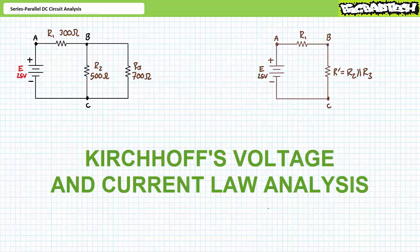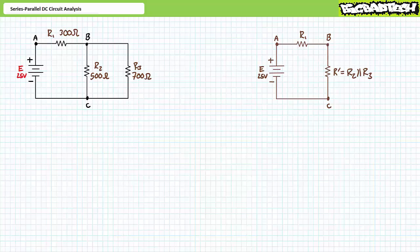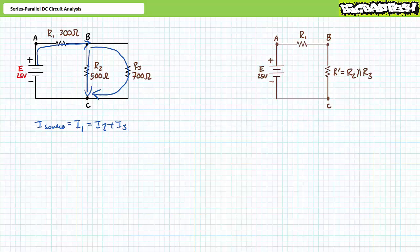The utility of Kirchhoff's current law and Kirchhoff's voltage law cannot be overstated. These simple and powerful techniques allow great conceptual leaps to be made during series-parallel circuit analysis. Let's look at how current flows through our first example using Kirchhoff's current law. Source current must travel through R1, then it splits into two paths — one traveling through R2 and the other traveling through R3. It can be said that source current equals I1, which equals I2 plus I3. This analysis reinforces our earlier conclusion that R2 is in parallel with R3, a simplification I'm calling R single prime, where R single prime is in series with R1.